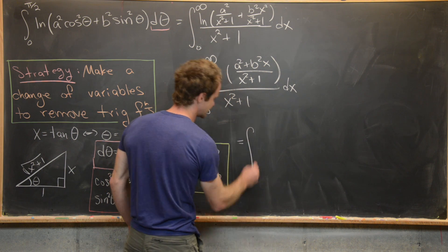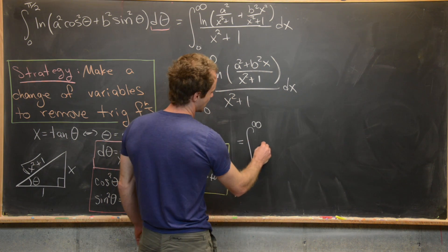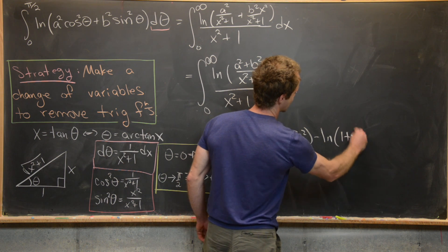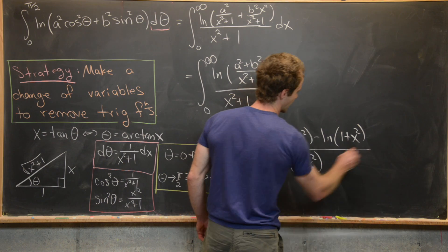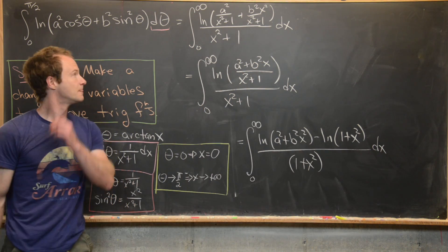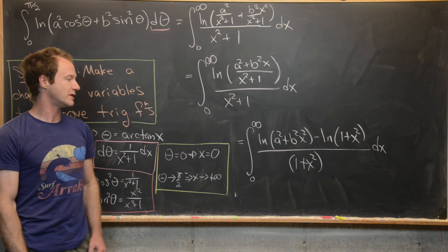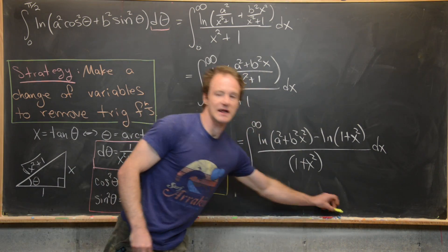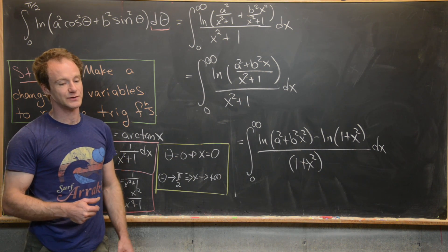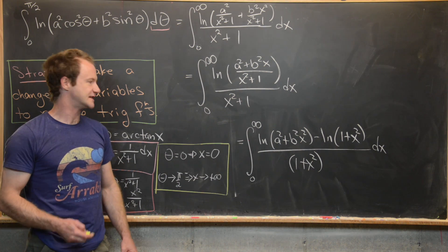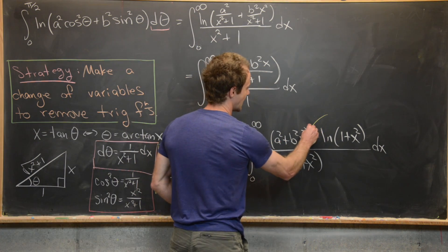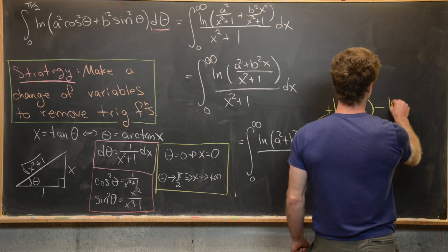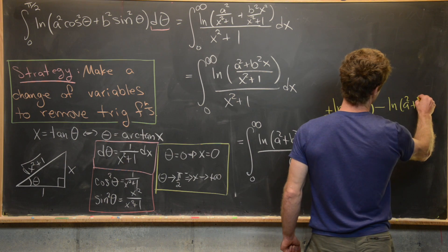We can rewrite that as the integral from zero to infinity of the natural log of a squared plus b squared x squared minus the natural log of one plus x squared, all over one plus x squared, dx. Now there's one more thing I want to do before the next step: I want to add zero to the numerator in the form of plus and minus the natural log of a squared plus x squared. So I insert plus natural log of a squared plus x squared and minus natural log of a squared plus x squared.